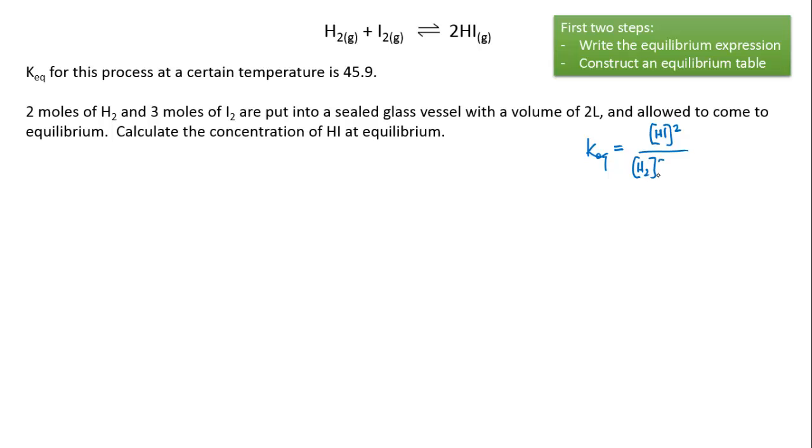Keq equals products over reactants, so we've got the concentration of hydrogen iodide squared over the concentration of hydrogen times the concentration of iodine. Next we're going to construct an equilibrium table, so we can do initial concentration and equilibrium concentration, and we might as well put the change row in there just for clarity.